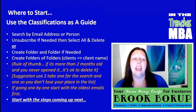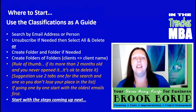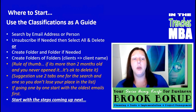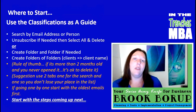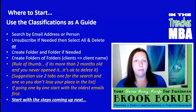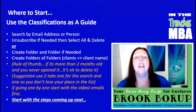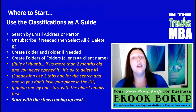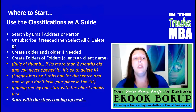So where to start, using the classifications as a guide: search by email address or person. Unsubscribe if needed, then select all and delete. If you have an email that falls into classification number one, you unsubscribe - you only have to do it once - then search by that email address. It will bring up every single email you've ever gotten from that address, and then all you have to do is select it and delete all. You can delete hundreds at once, which is great for inbox zero, especially when you have 20,000 emails in your inbox.